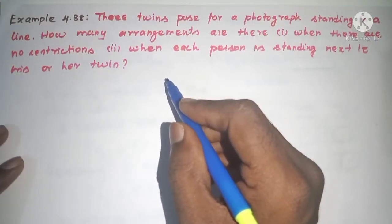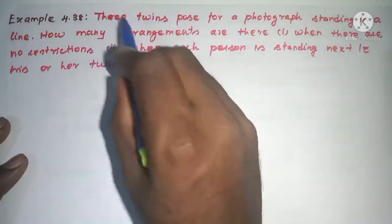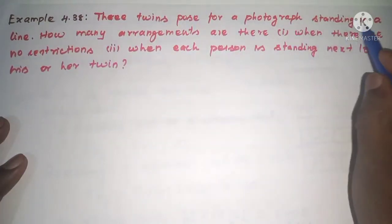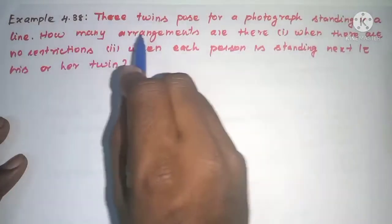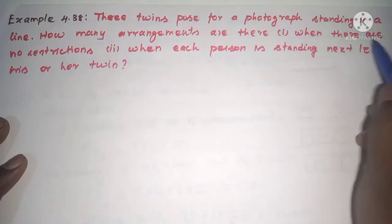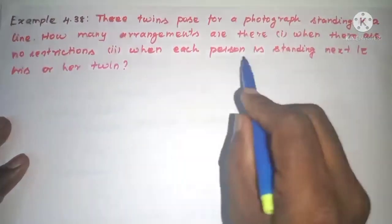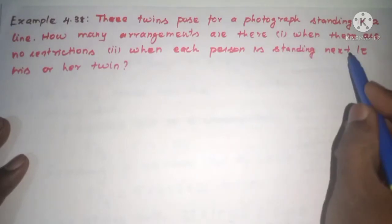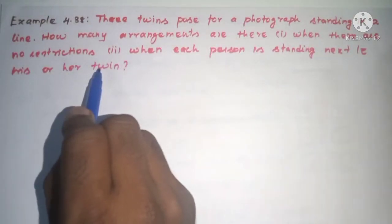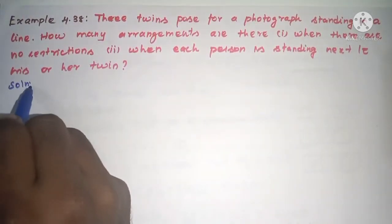Hi students, this is Salama Max Tuition, 11th standard, example 4.38. Three twins posed for a photograph standing in a line. How many arrangements are there? (i) when there are no restrictions (ii) when each person is standing next to his or her twin. Solution: